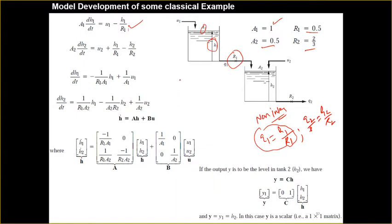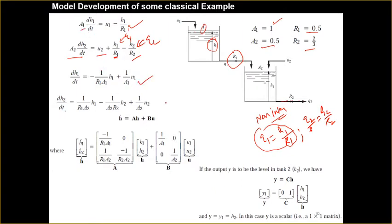In the second equation, we write Q1 plus U2 minus Q2 equals A2 times dH2 by dt. So A2 dH2 by dt equals U2 plus Q1, where Q1 equals H1 by R1, and Q2 equals H2 by R2. Dividing through by A1 and A2 respectively gives us the expressions for dH1 by dt and dH2 by dt.